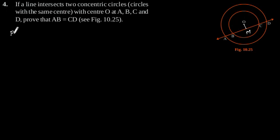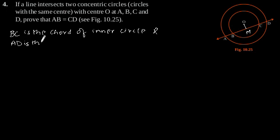BC is the chord of inner circle and AD is the chord of outer circle. As we know that perpendicular drawn from the center of circle bisects the chord